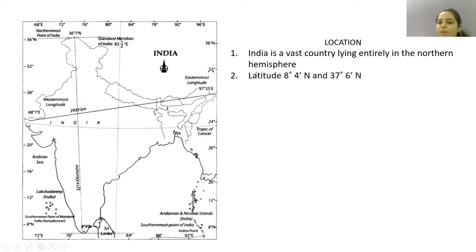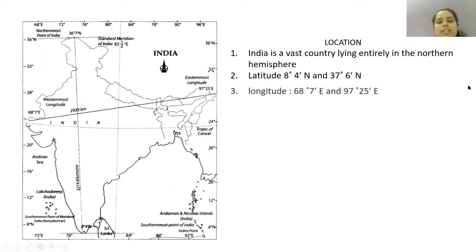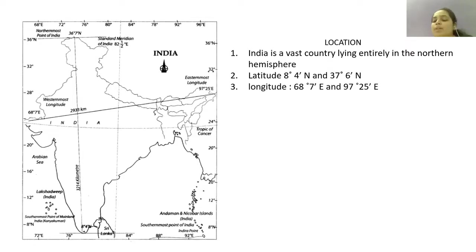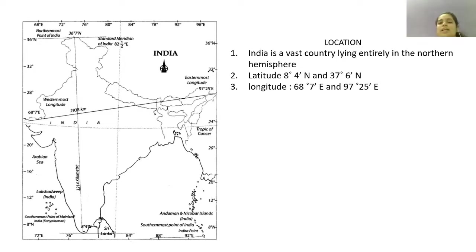The latitudinal extent is 8 degrees 4 minutes North to 37 degrees 6 minutes North, as it is above the equator. The longitudinal extent of mainland India is 68 degrees 7 minutes East and 97 degrees 25 minutes East. If we consider zero degree longitude, the standing line divides the world into west and east. As India is located in the east, the longitude is 68 degrees 7 minutes East to 97 degrees 25 minutes East.